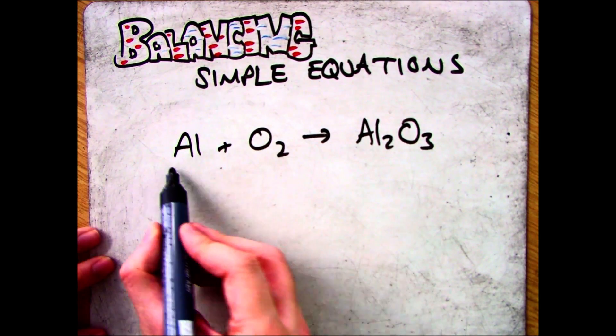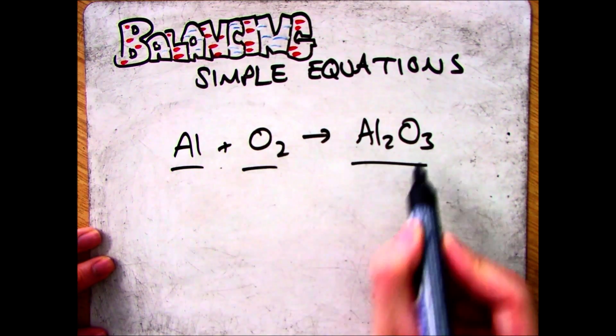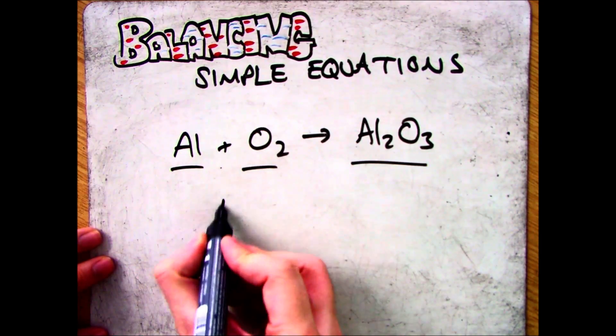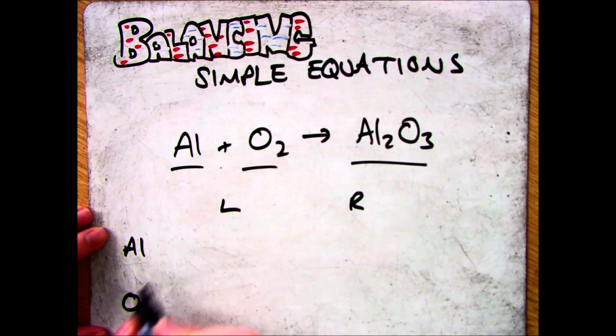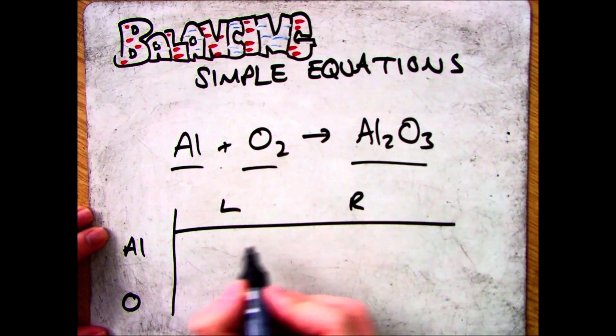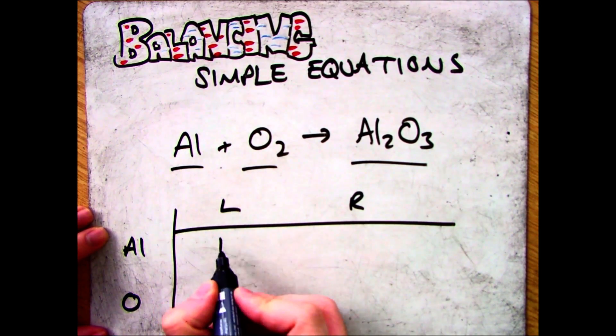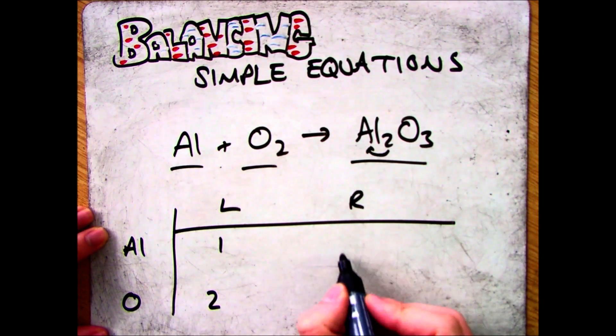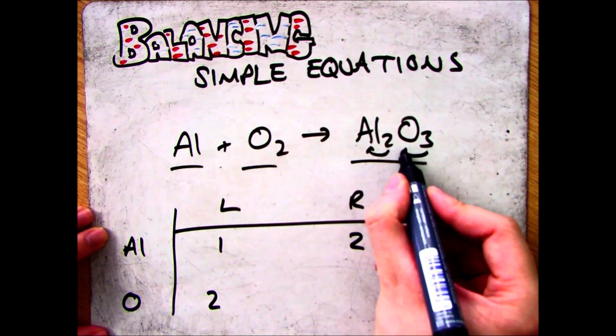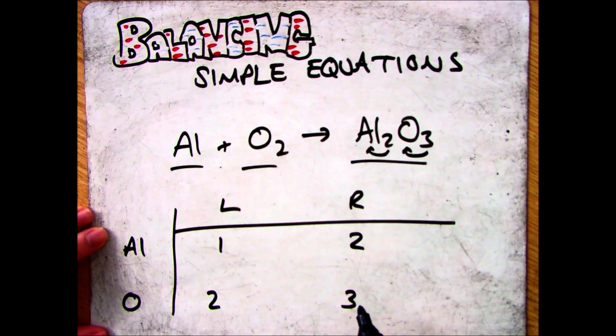If we were to have a look at a slightly more complicated one, so aluminium reacts with oxygen O2 to make aluminium oxide, do exactly the same steps again. So we've got one aluminium on the left and we've got two oxygens. On the right we've got two aluminiums and we've got three oxygens because that little number applies just the thing before it.